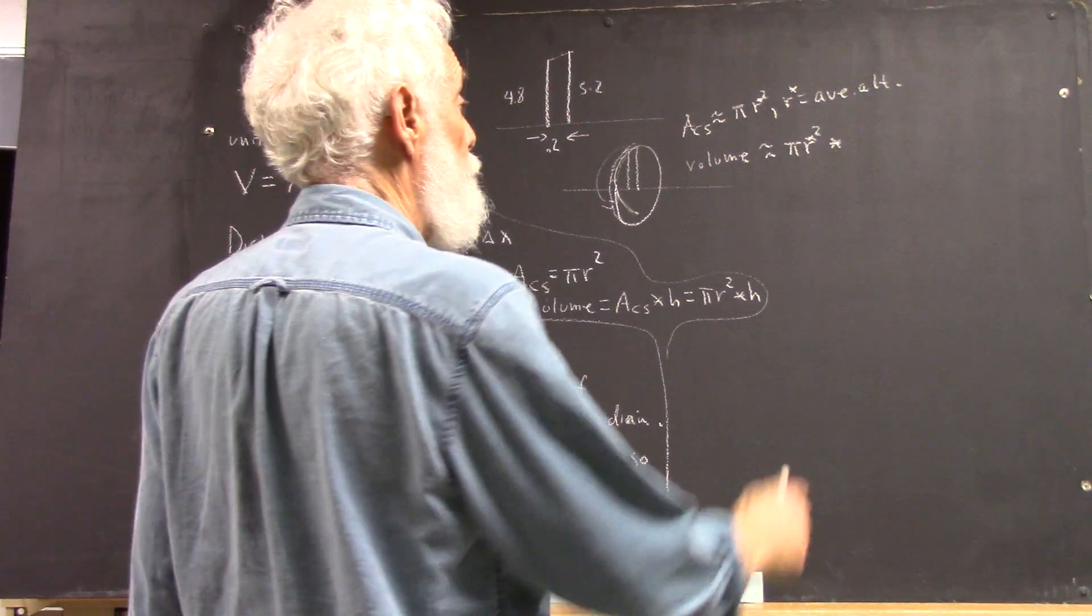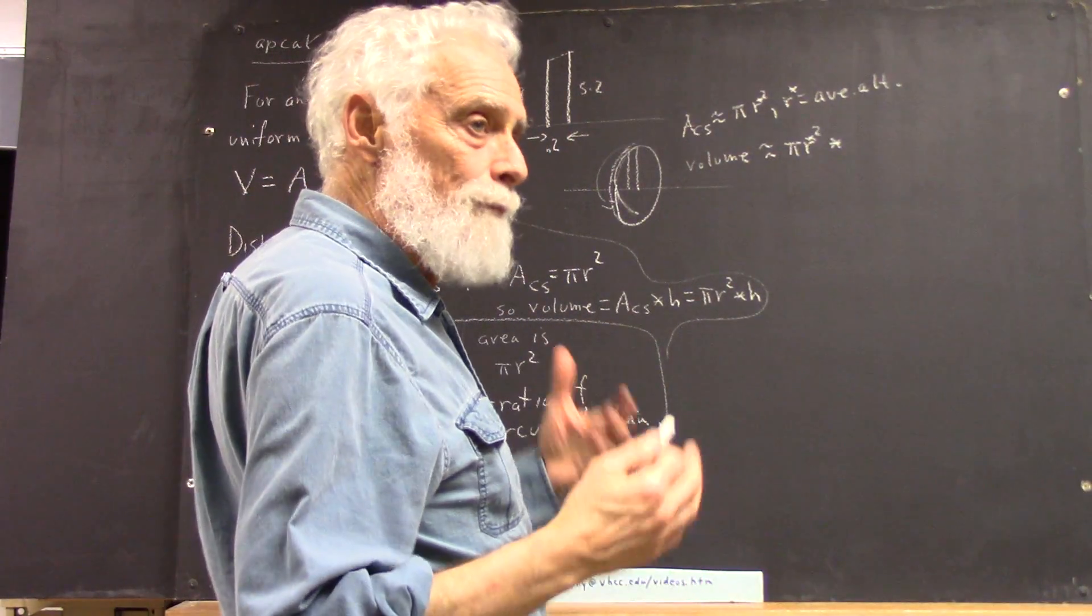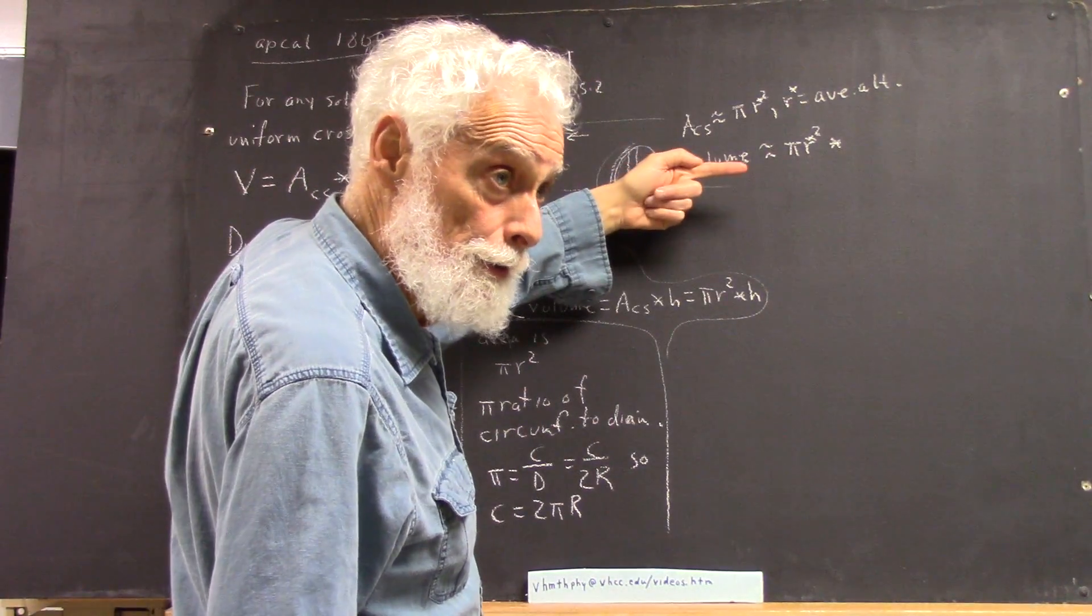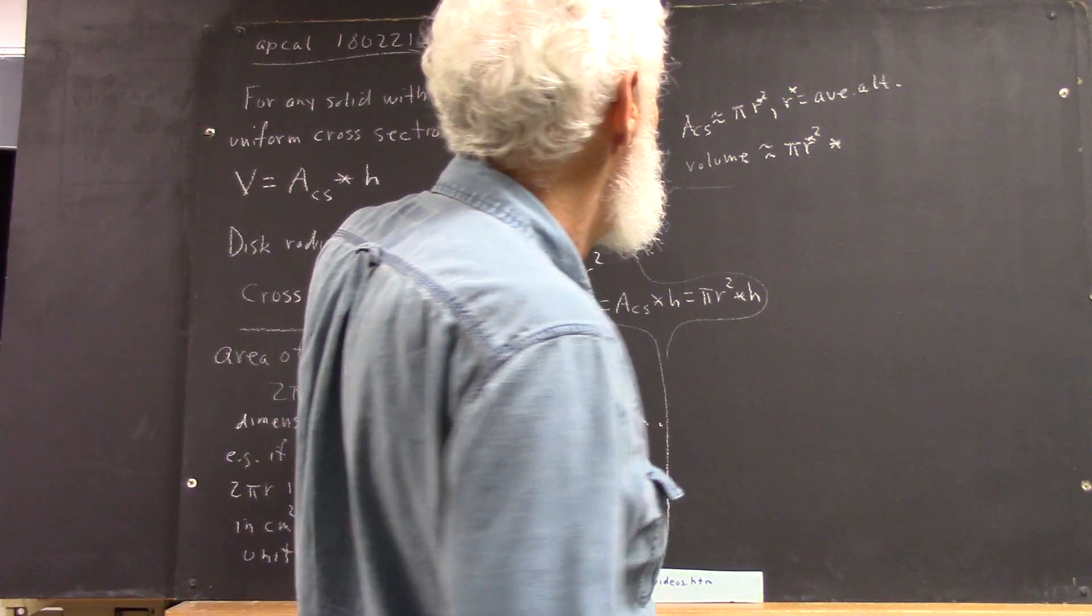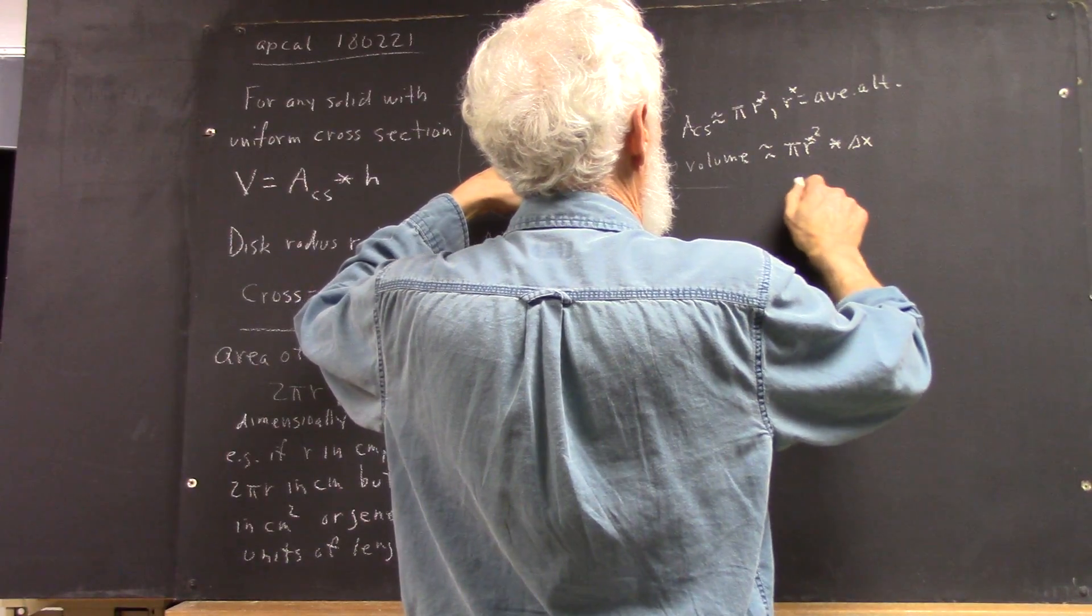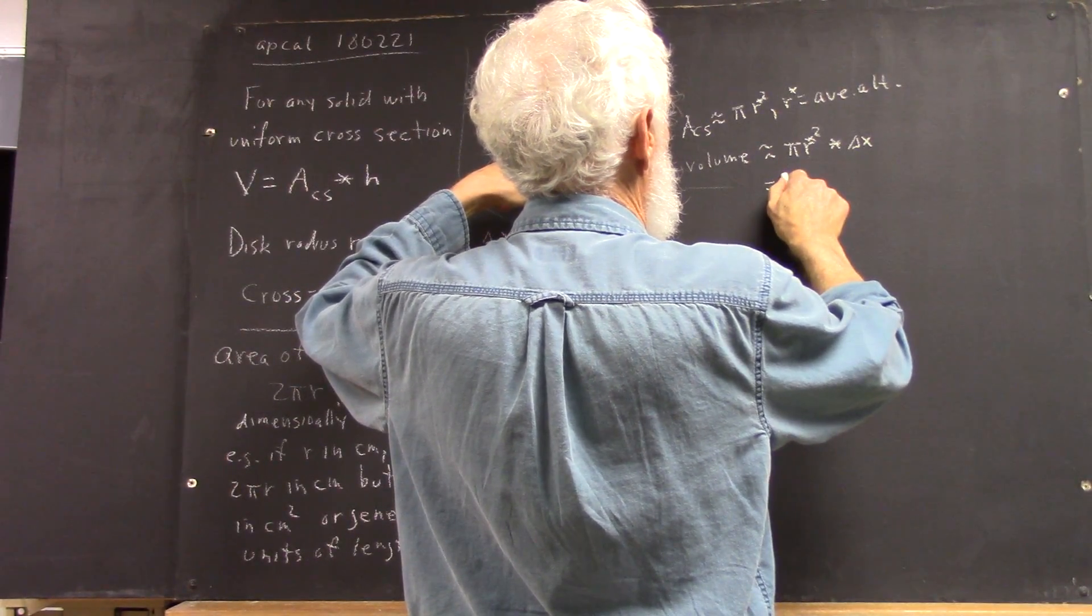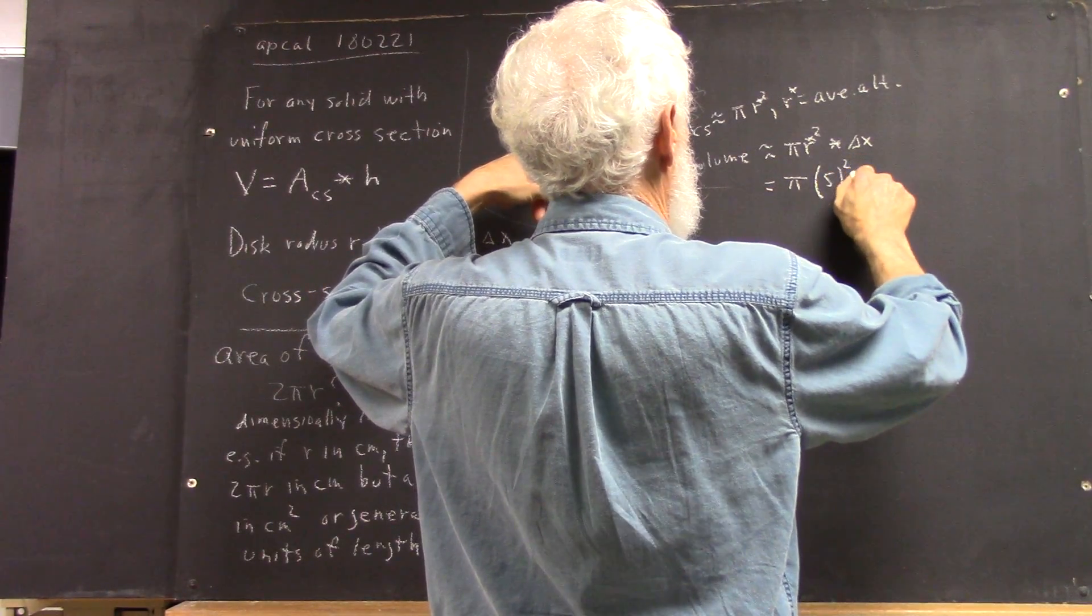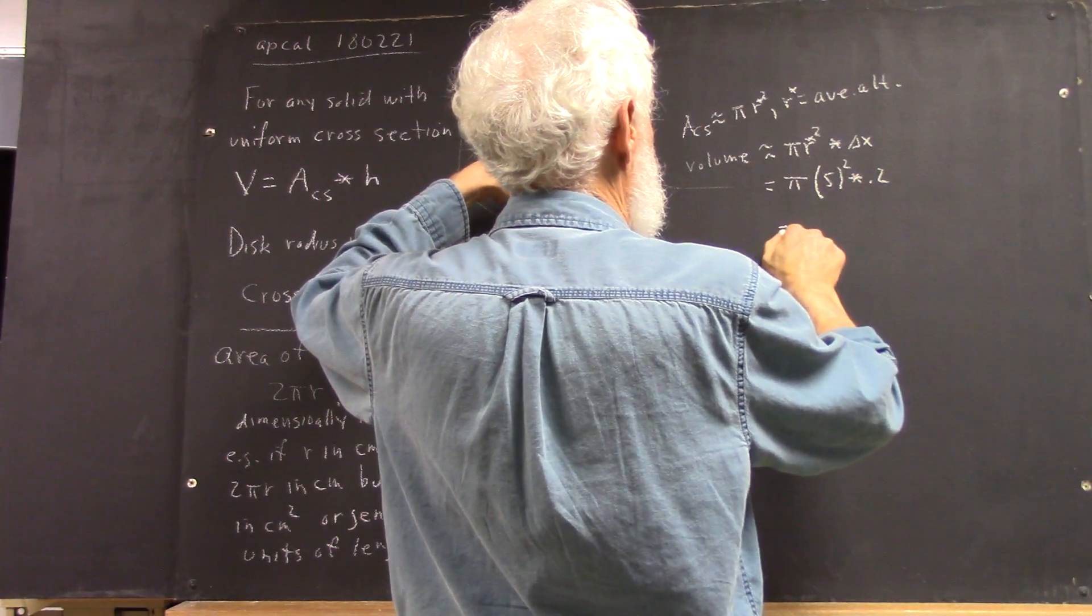So, it would be pi times r star squared times the altitude. Now, the cross-section's in this direction, so the altitude's in this direction, that's right, so that would be times delta x, which would be equal, then, pi times 5 squared times 0.2. Now, that's going to be 25, and 0.2 times 25 is 5, so it's going to be 5 pi.